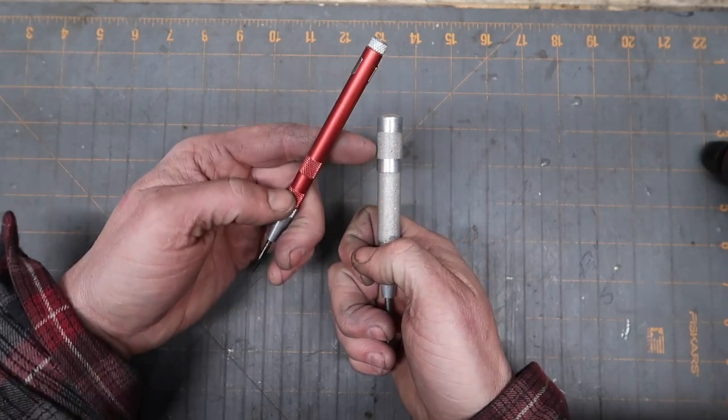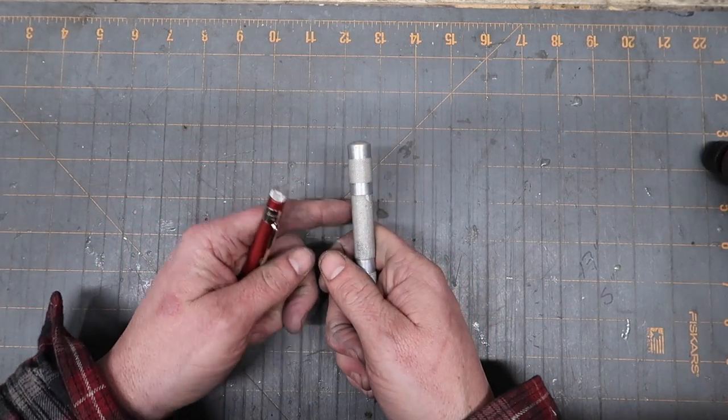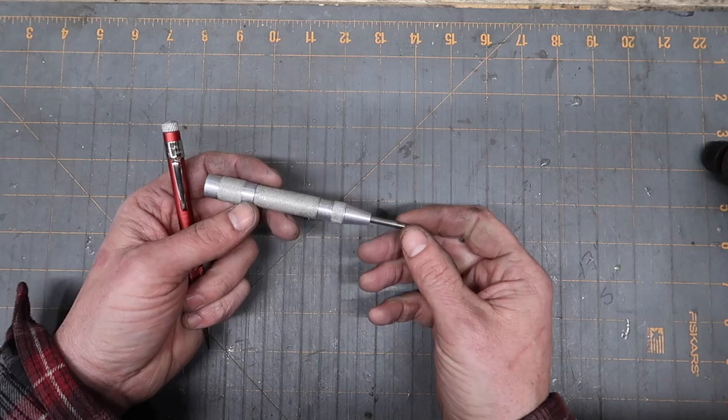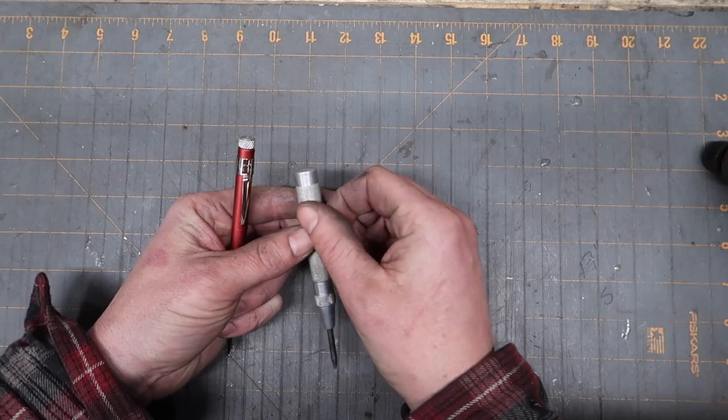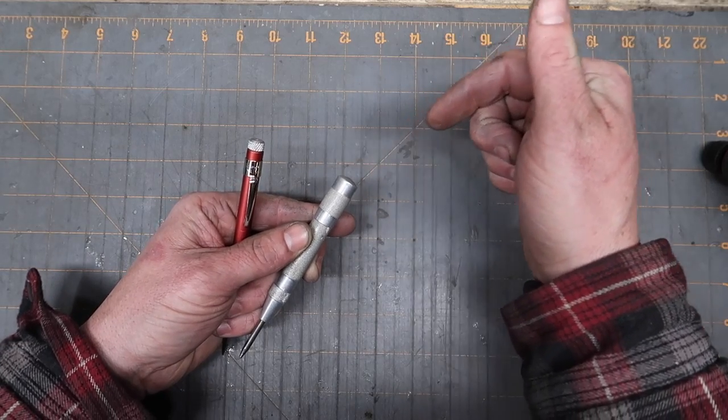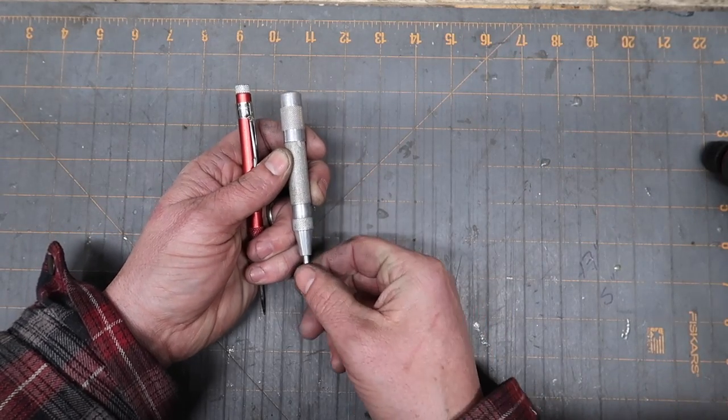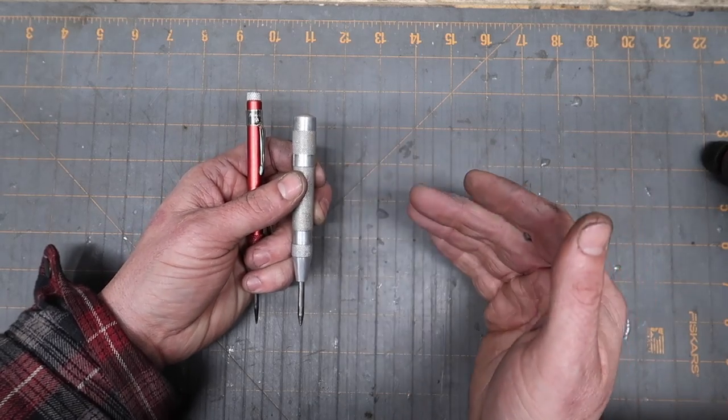Inside of these barrels here is a spring and then there's a little release mechanism and a little hammer. What happens is you simply press this down and when it reaches the end of its stroke, the spring will release and there's a hammer that will smack the end of this little punch here and create a little divot for you in the material.